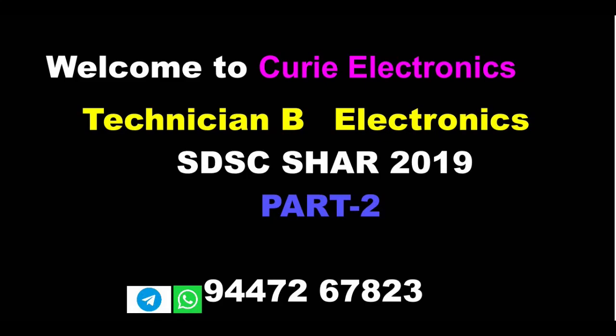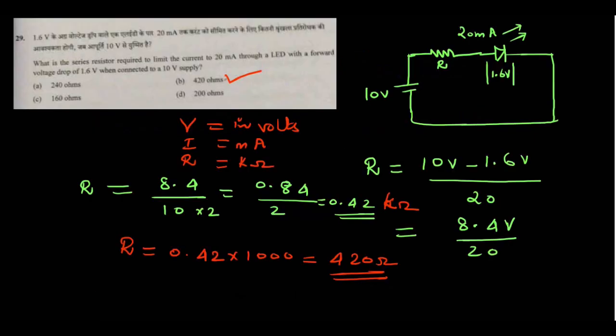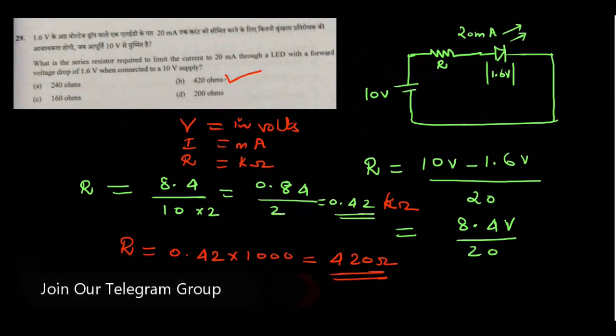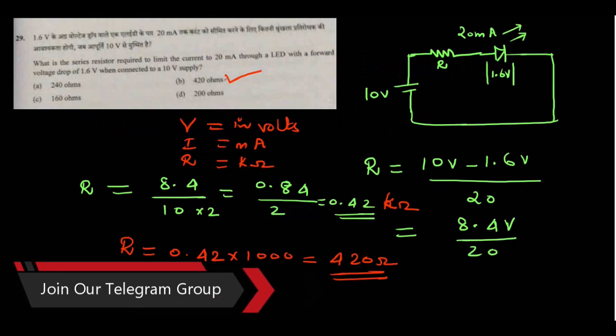Welcome to Curie Electronics. Today we will solve the second part of 2019 SDSC Sharp Technician B Electronics question paper. The first part we solved up to 29 questions. In this part we will solve the remaining 21 questions. In this question paper there were 50 questions. So let's solve the remaining 21 questions.